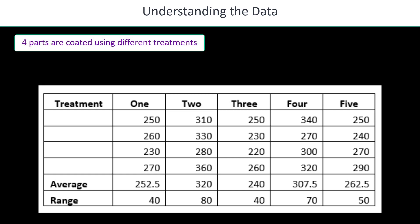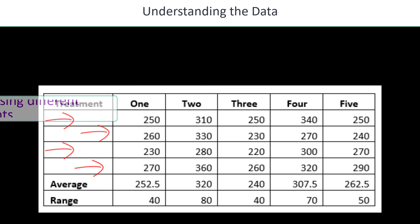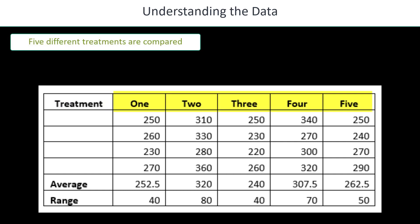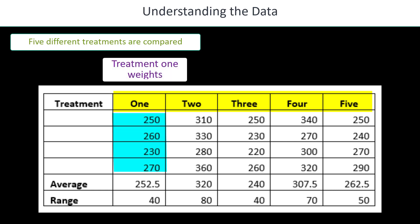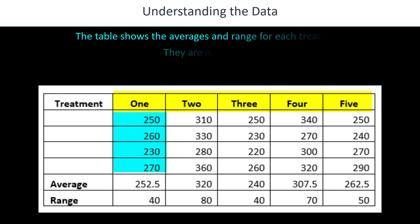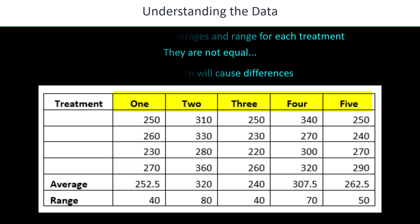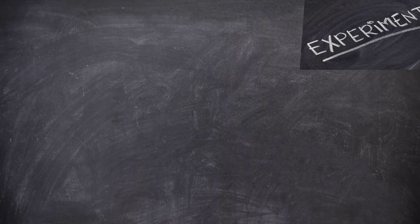Understanding the data, we're going to start. We have four parts that are going to be coded using five different treatments. The parts are in rows. So part one is the first row, part two, the second, part three, the third, and part four, the fourth. And then we're going to have five different treatments to compare. And those are in the yellow. For example, in treatment number one, the four different parts had the results of 250, 260, 230, and 270. And we calculate the average and ranges as well. They're not the same, of course, because we have normal process variation will cause there to be some differences.